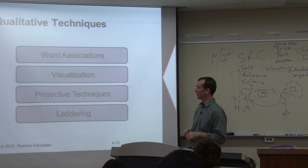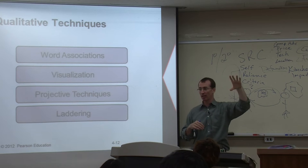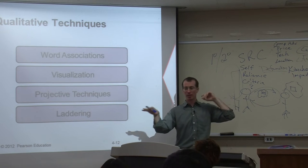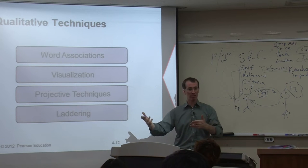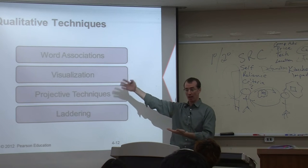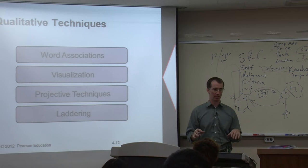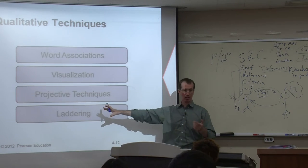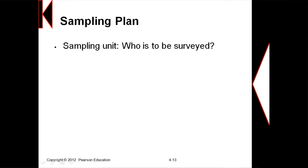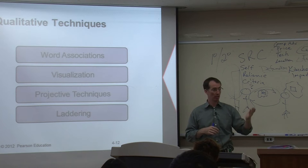Qualitative techniques include word associations, visualizations, projective techniques, and laddering. For example, if you want to reach the director of your dream company like Samsung, start by interviewing friends and other students. Ask if they know anyone at Samsung. Then survey people in the parking lot or at the front gate. From there, go inside and talk to people at the information desk. Find out where managers go for lunch — maybe a Starbucks — and interview them there in a relaxed setting. Once you have that background information, you'll sound intelligent when you approach managers or directors.